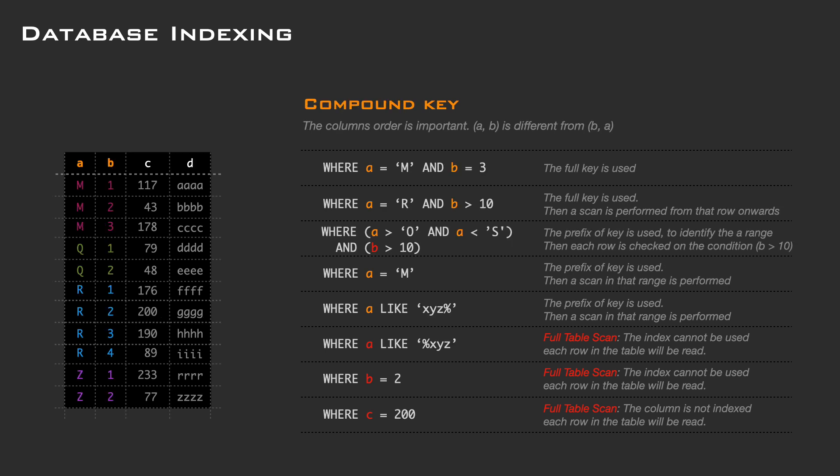As we did for the bookshelf, we can organize the data using multiple columns. A key using two or more columns is called a composite key. You have to keep in mind that the column order is important to define the data layout. In this case, our first filter is column A — we can perform a specific search or range query to narrow down the data to examine, as we did with the author queries in our bookshelf. If we try to perform a query only using column B, the index will not be used, since the data is sorted using A as a first component. Similarly, if we use C or D, the database has to read and check each row.